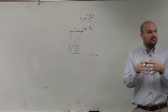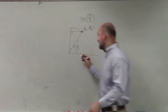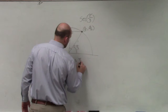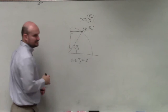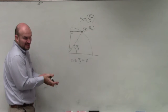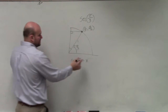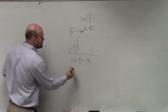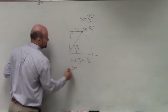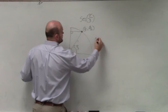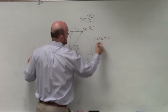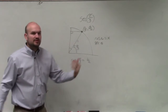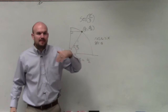So therefore, we know that the cosine of pi over 3 is equal to the x coordinate, which would be equal to 1 half. The cosine of an angle is equal to x. So if secant is the reciprocal of cosine, then what should secant be?